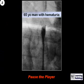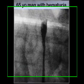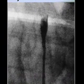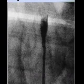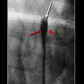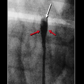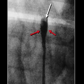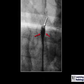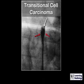The second case is a retrograde pyelogram on a 65-year-old man with hematuria. There is a concave filling defect shown by the white arrow on the leading edge of the contrast in the ureter, and there is dilatation of the ureter distal to the point of the filling defect. This is a transitional cell carcinoma of the ureter.